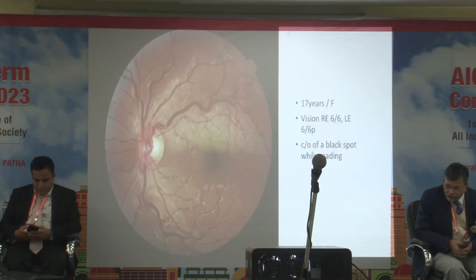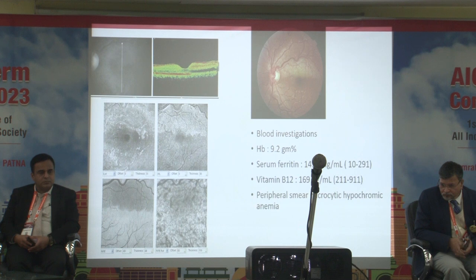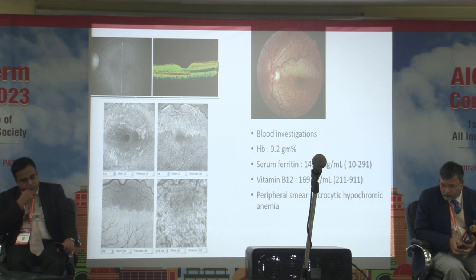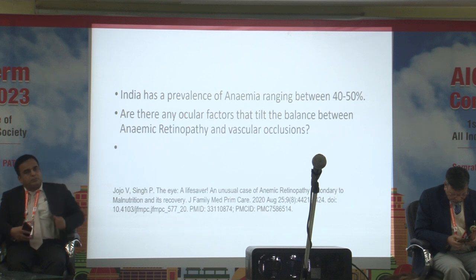At two months post-injection and one year post-injection, tortuosity had gradually decreased and her vision had been 6/6 since day one, preserved even later. Around the same time, I had another case — a young female, 17 years old — with vision 6/6 in the right eye and 6/6 partial in the left eye, with disturbance while studying. There was a branch retinal artery occlusion. Her hemoglobin came out to be 9.2. She said she had an even lower hemoglobin and was being treated for anemia — all findings of microcytic hypochromic anemia. She also developed good vision after treatment. She was not willing to receive anti-VEGF so nothing was injected.